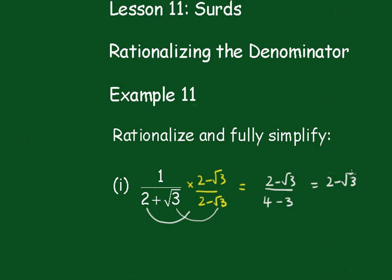So that's the interesting one, isn't it? 1 over 2 plus root 3 is 2 minus root 3.